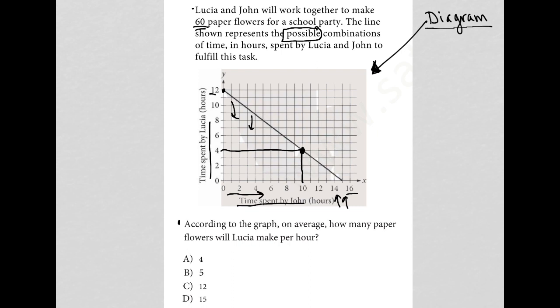I know that she can make 60 flowers in 12 hours. It's kind of something I'd already paid attention to there, right? So if the question's only asking about Lucia, I need to find a data point that only includes Lucia. And that would only be my y-intercept, a point that I've already identified here a couple of times now.